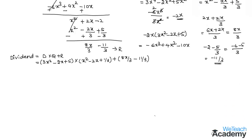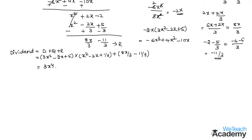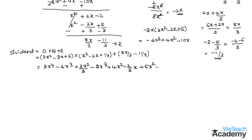Multiplying 3x² by x² gives 3x⁴; 3x² by minus 2x gives minus 6x³; 3x² by 1/3 gives x². Then minus 2x times x² gives minus 2x³; minus 2x times minus 2x gives plus 4x²; minus 2x times 1/3 gives minus 2x/3. Then 5 times x² gives 5x²; 5 times minus 2x gives minus 10x; 5 times 1/3 gives 5/3. Now we add the remainder 8x/3 minus 11/3.